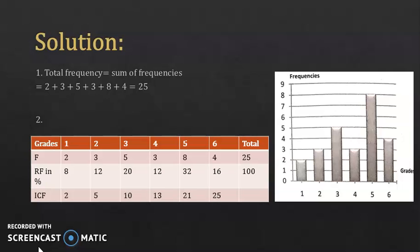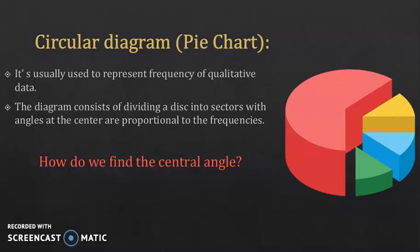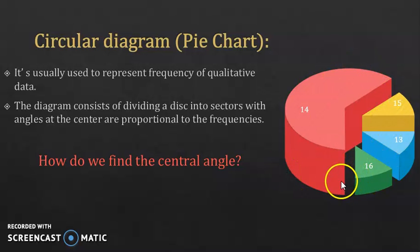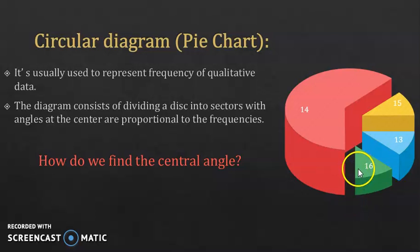Now you'll be learning how to construct pie charts or circular diagrams — another way of representing statistical data, also often used for qualitative data but applicable to quantitative as well. The diagram consists of dividing a disk into sectors whose central angles are proportional to the frequencies. For example, from this chart you can see that most students are 14 years old because the central angle of that sector is the greatest, and the fewest students are 16 years old since that sector's central angle is the smallest.